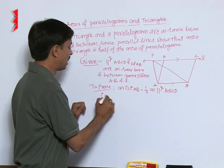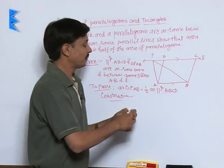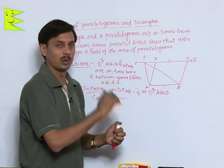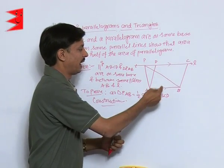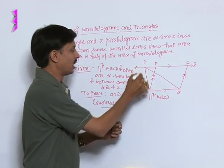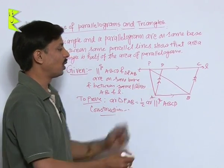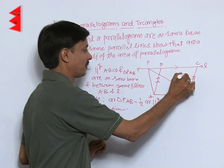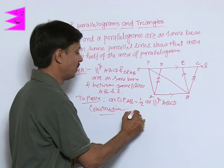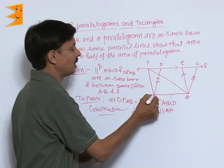In order to prove this, we need a bit of construction. We have parallelogram ABCD where AB is parallel to CD and AD is parallel to BC. There is a triangle PAB. So I am drawing a line from vertex B parallel to AP, and I take a point E on that line. In construction: draw BE parallel to AP.